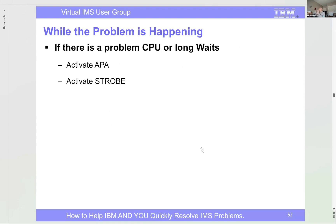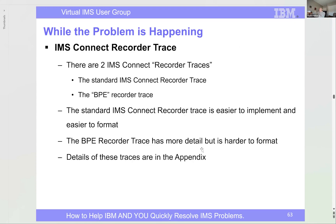If there are CPU problems or long waits, activate Strobe or APA. If things are going on in IMS Connect, turn on the IMS Connect recorder trace — there are two: the standard one or the VPE one. All details are in the appendix. IMS Connect Extensions also has a collection level and a trace level. If you need detailed information, set collection level to four and trace level to two — there are online commands to change these dynamically.